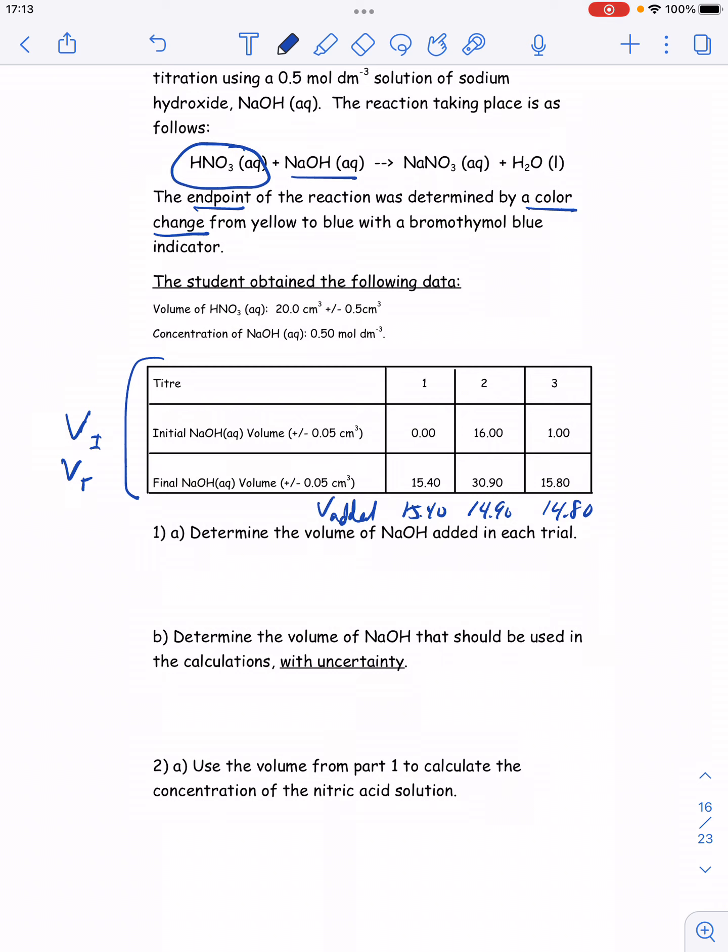Now, because the uncertainty on these volumes is 0.1 cm cubed, you really need your trials to be within 0.1 cm cubed of each other. And so this first trial is a half cm cubed away.